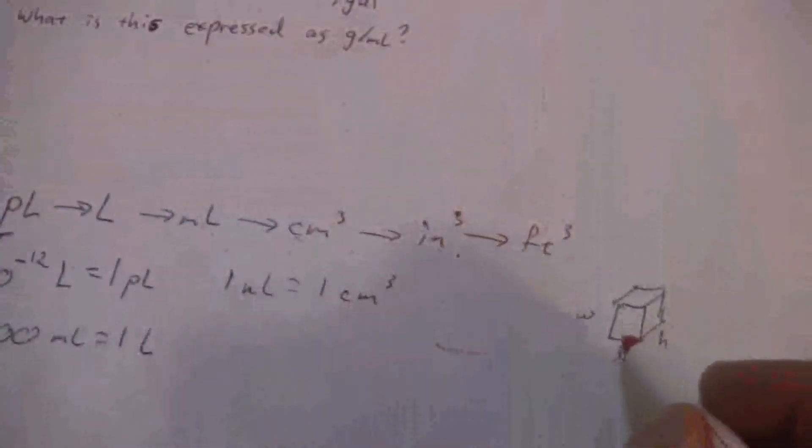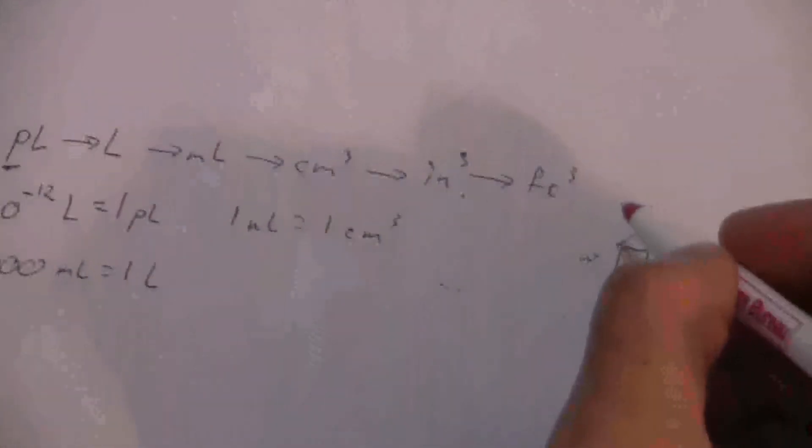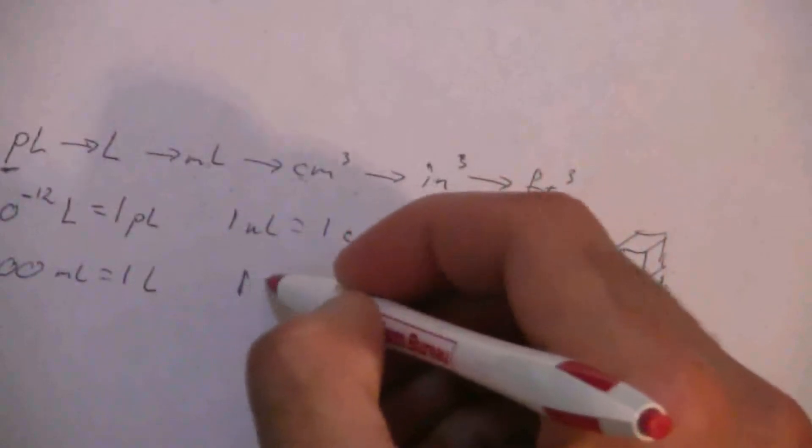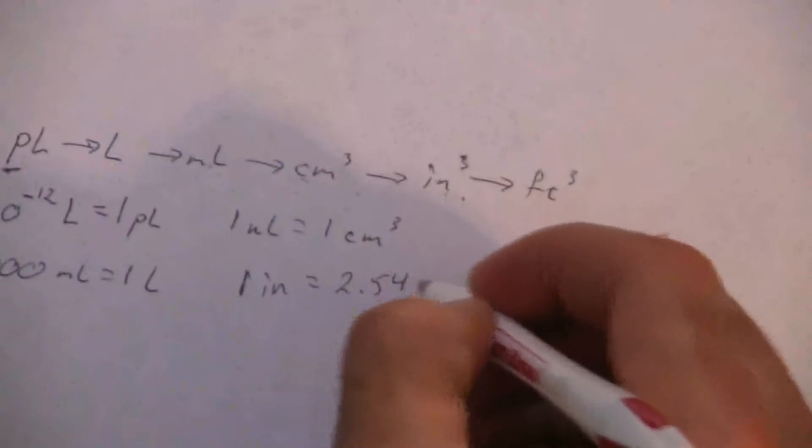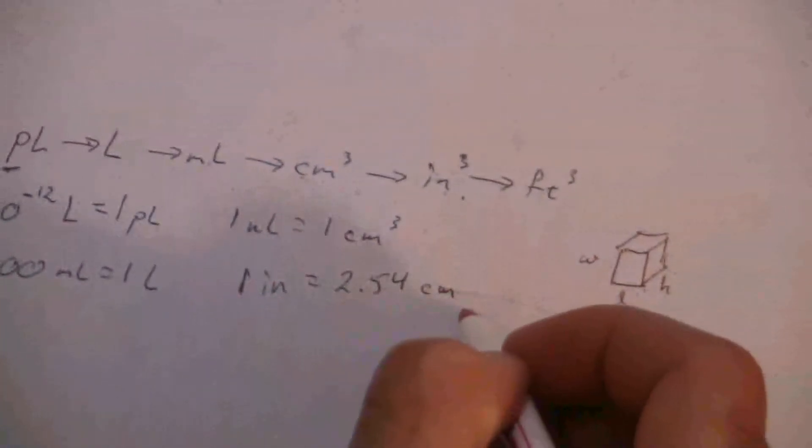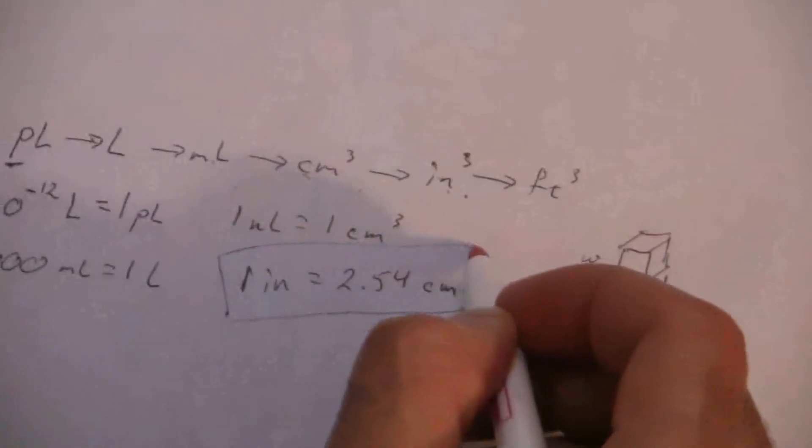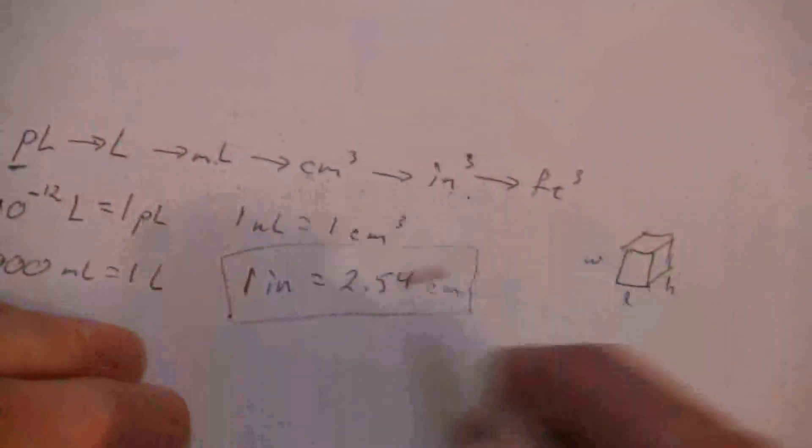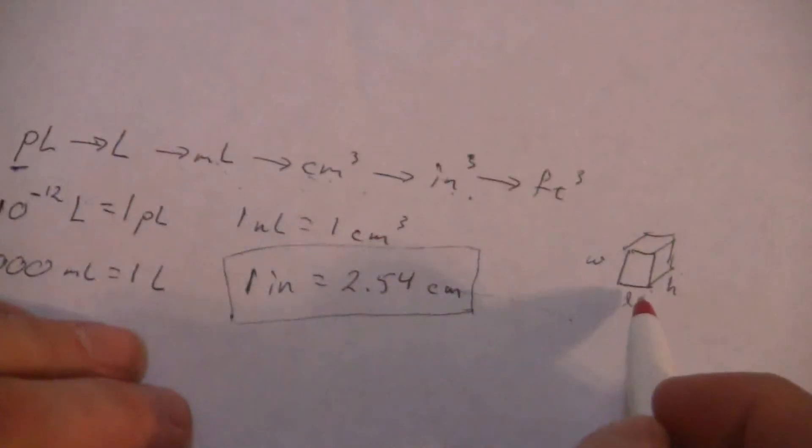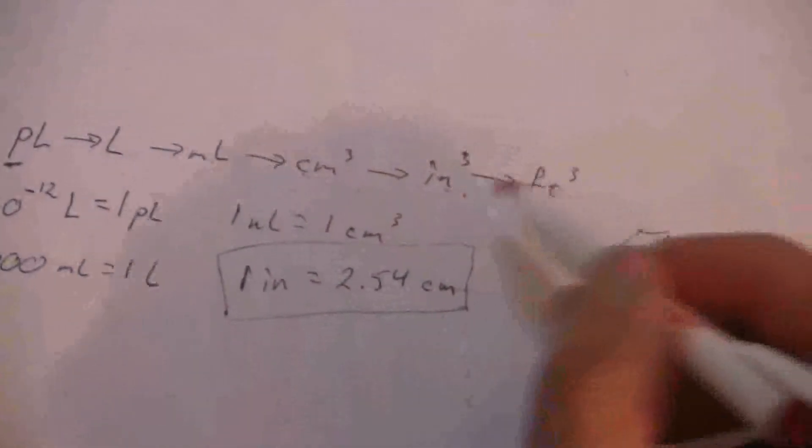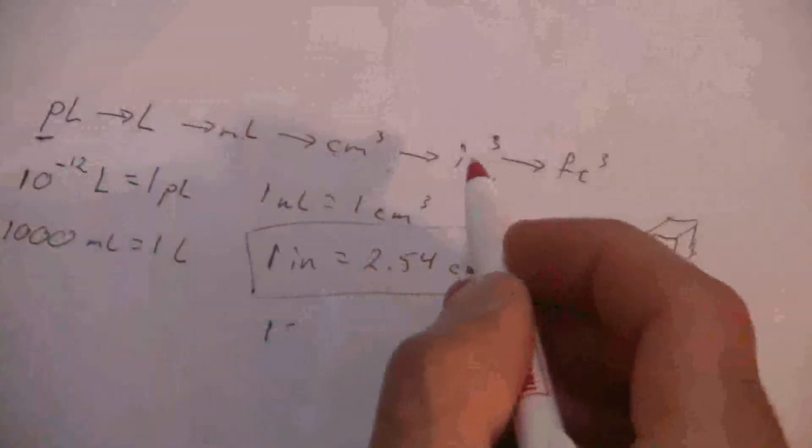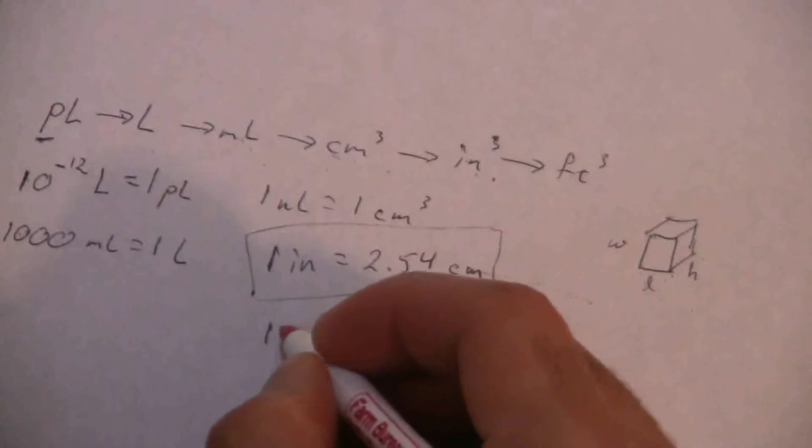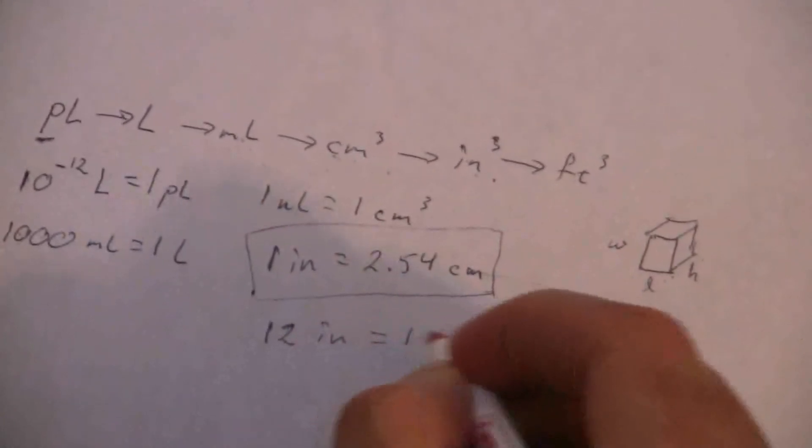So what that means is, I can convert those lengths, I can take my conversion factor of one inch equals 2.54 centimeters. You need to know this. This is the most common, I would say, commonly used English to metric conversion factor. So you should know that one. But anyway, I can convert each of those lengths from centimeters into inches, and then I'll have cubic inches. I'll show how we do that in just a second. And then the same sort of thing here, I don't know how many cubic inches are in a cubic foot, but I do know how many inches are in one foot.